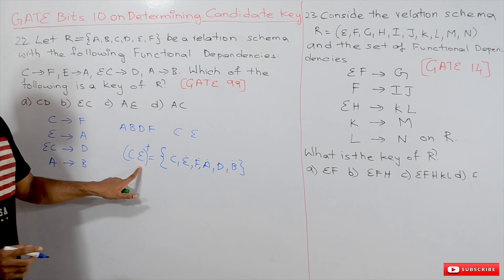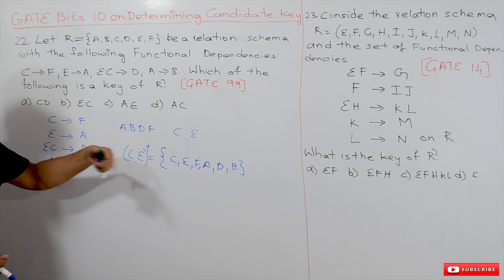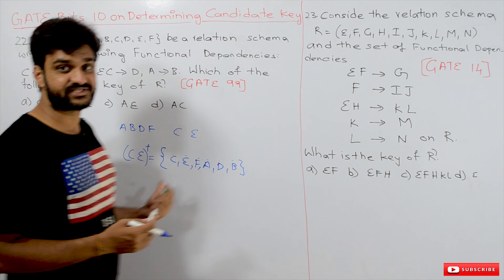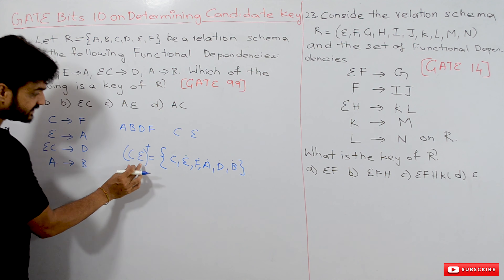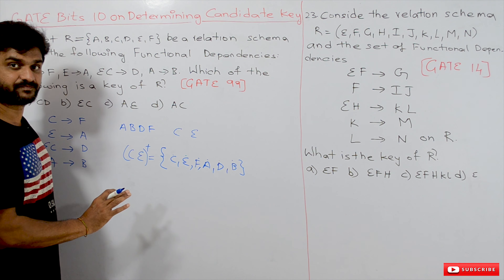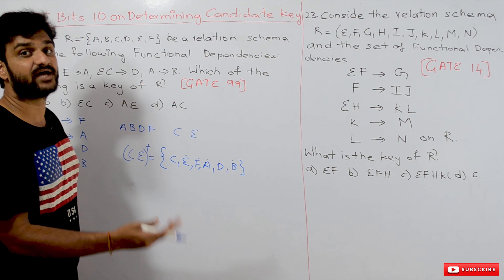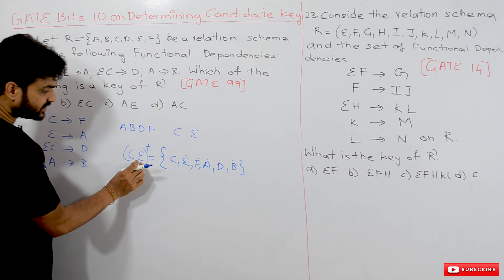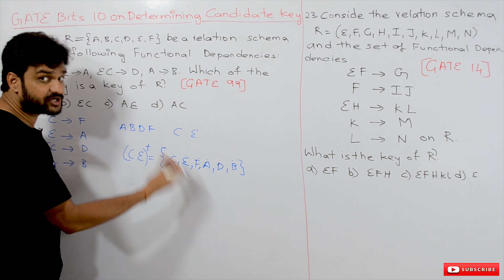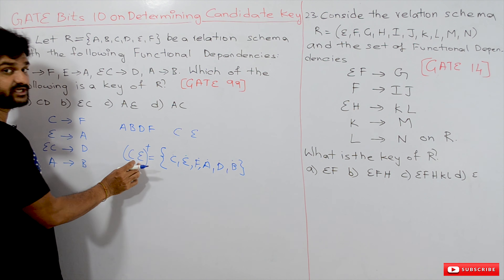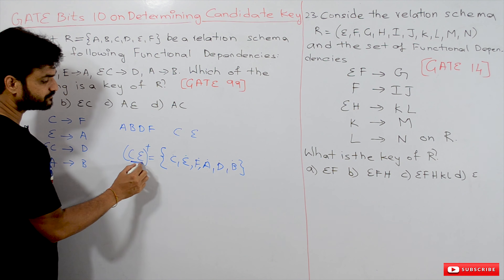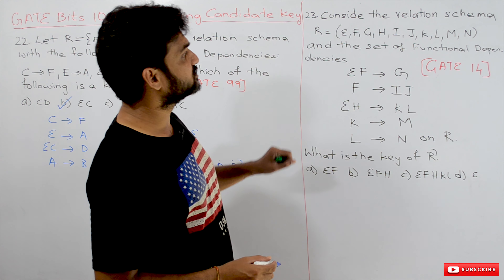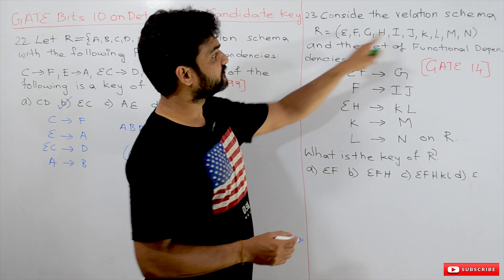We got all the attributes that are there in the relation. So do we need to find any other combination with C and E? No, because anything added to {C, E} would make it a super key, not a candidate key. So the only candidate key possible is {C, E}, which is the correct option.